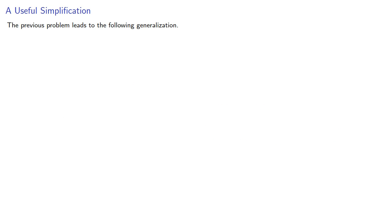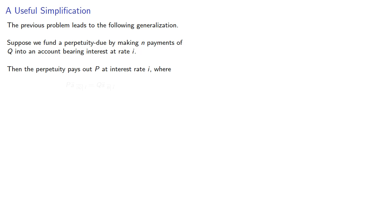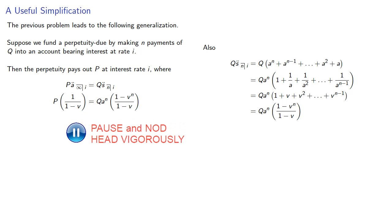The previous problem leads to the following generalization. Suppose we fund a perpetuity-due by making n payments of Q into an account bearing interest at rate i. Then the perpetuity pays out P at interest rate i, where P A double dot angle infinity at interest rate i equals Q S double dot angle n at interest rate i. Expanding both sides and because our interest rates are the same, we can remove this common factor of 1 minus v.